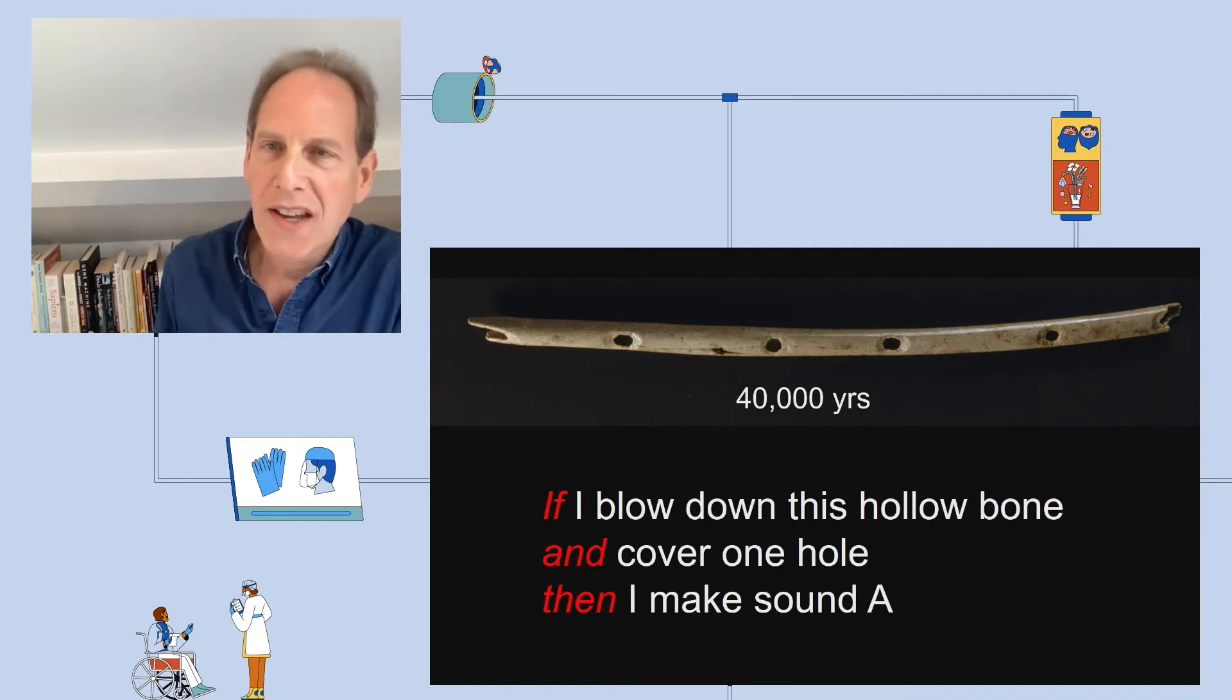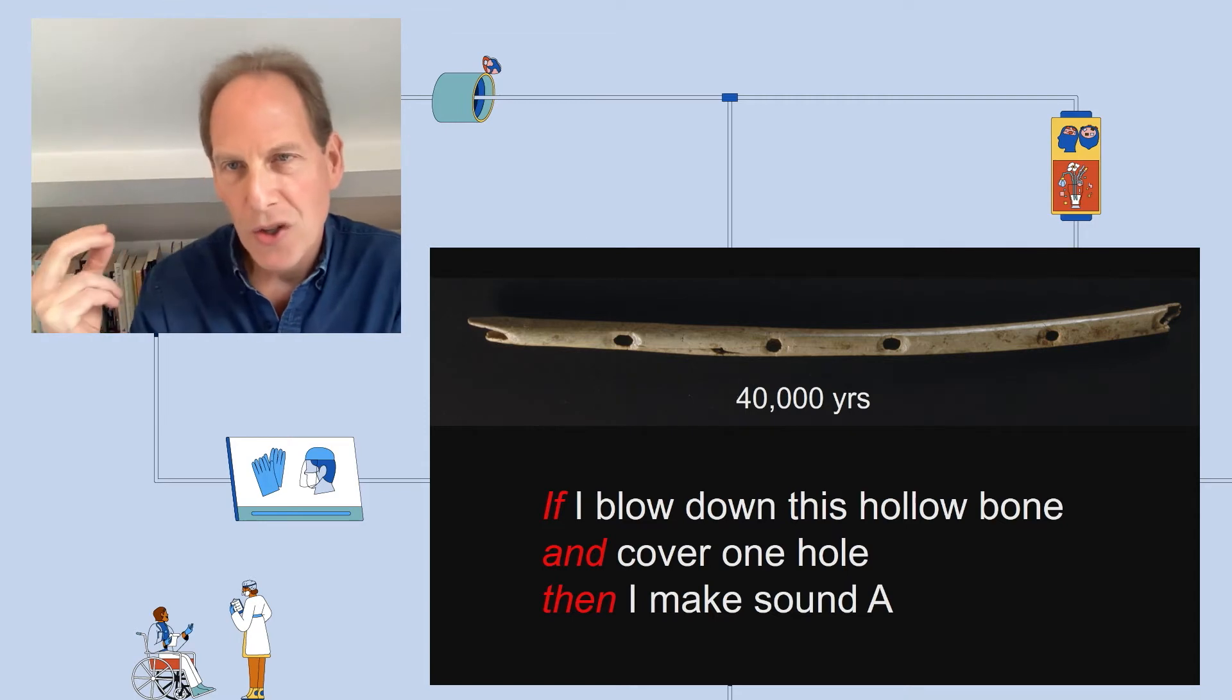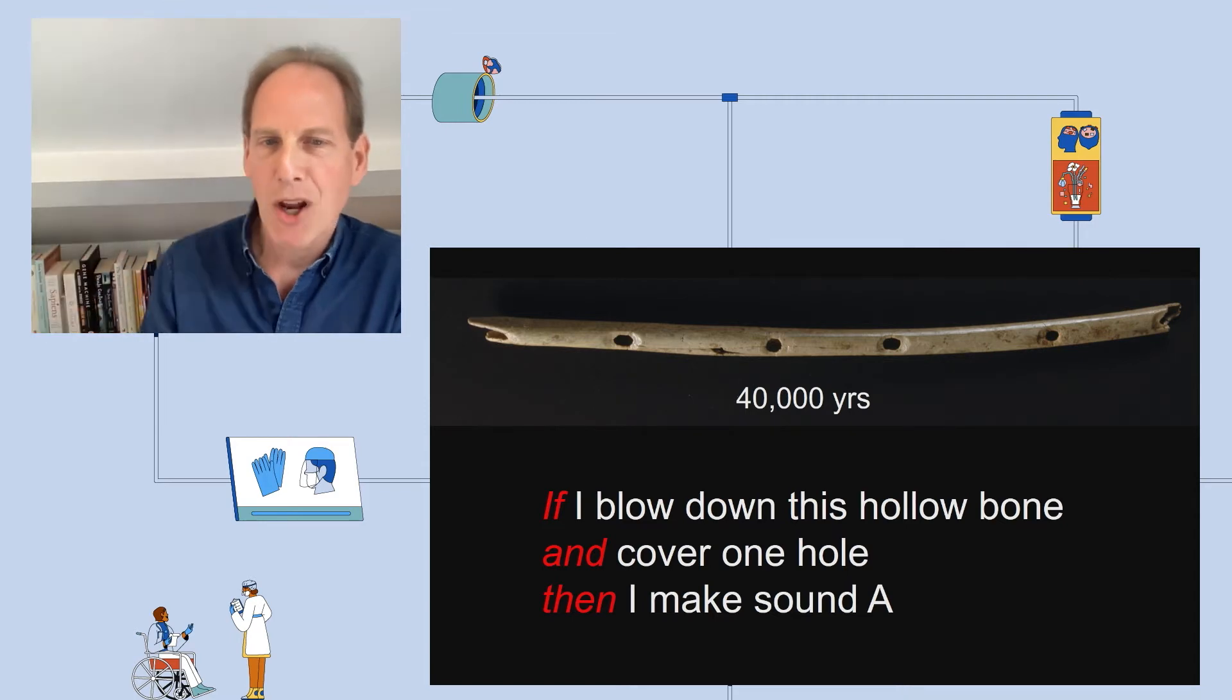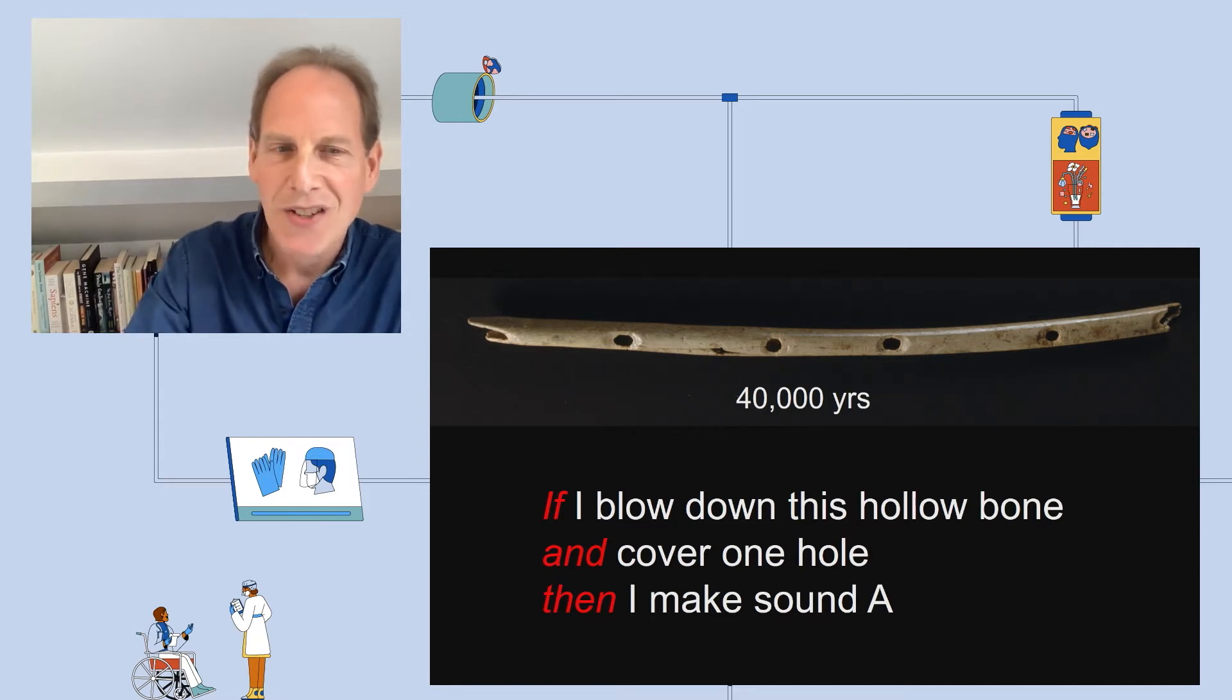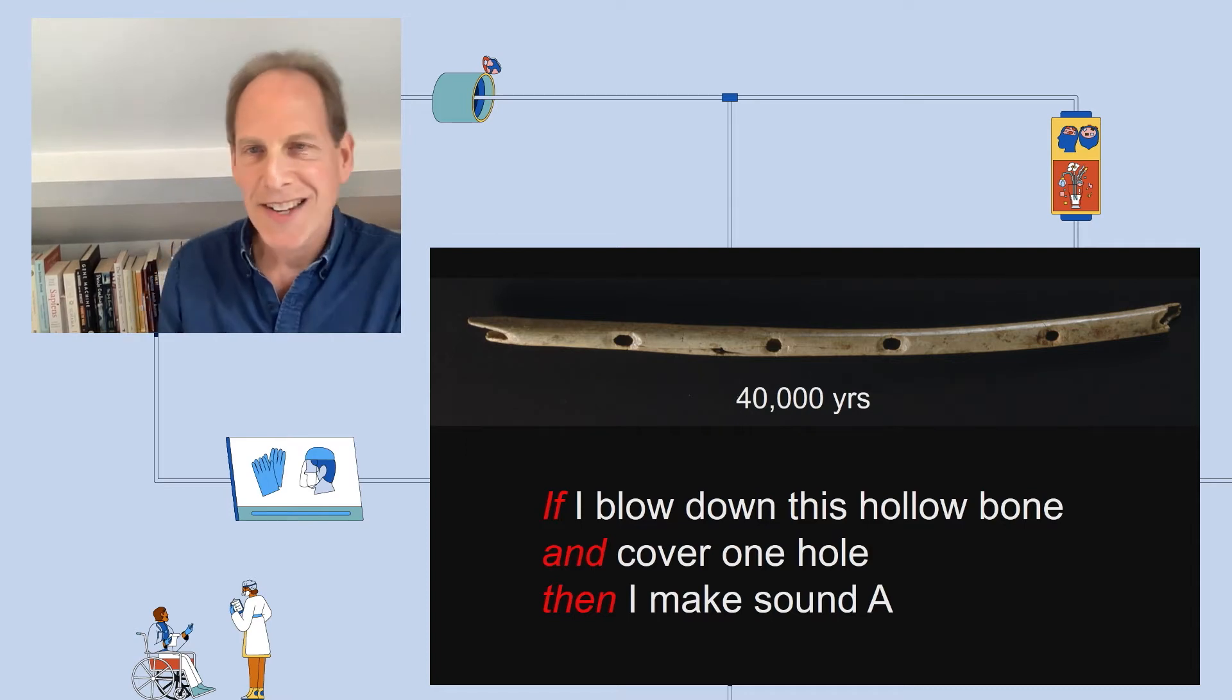And 40,000 years ago we see the earliest musical instrument that's ever been found, a flute made of a hollow bone. Imagine the thought of the ancestor who made it: if I blow down the hollow bone and cover one hole, then I make a specific sound. But if I blow down the hollow bone and cover two holes, then I make a different sound. So our ancestor had invented a complex tool, a musical instrument, and a system of sounds that we call music.